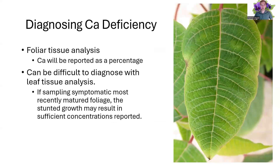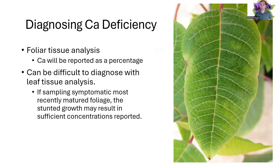Diagnosing calcium deficiency — foliar tissue analysis is an option, but it's going to be reported as a percent. Looking at concentration is going to be very hard to diagnose since you have a smaller leaf with a smaller volume, and even though there's a lower total amount, the concentration change can be very difficult to detect. You're going to want to sample the most recently matured leaves, and you may still see sufficiency, but understanding the symptoms — including stunting that can occur — is important.